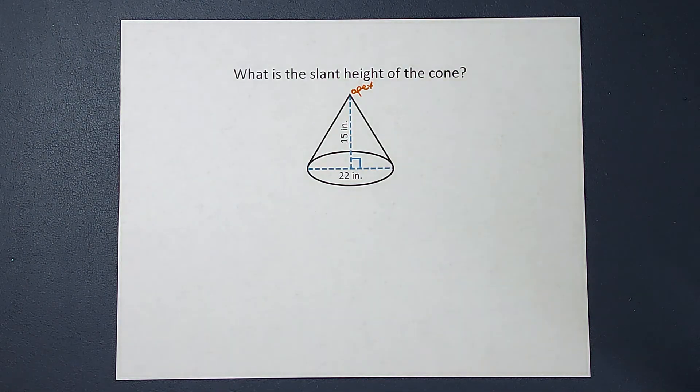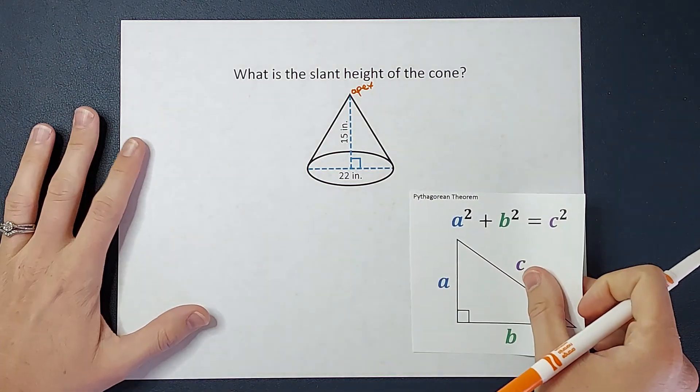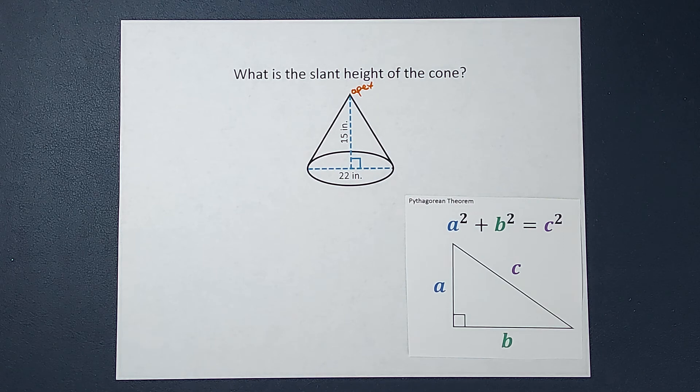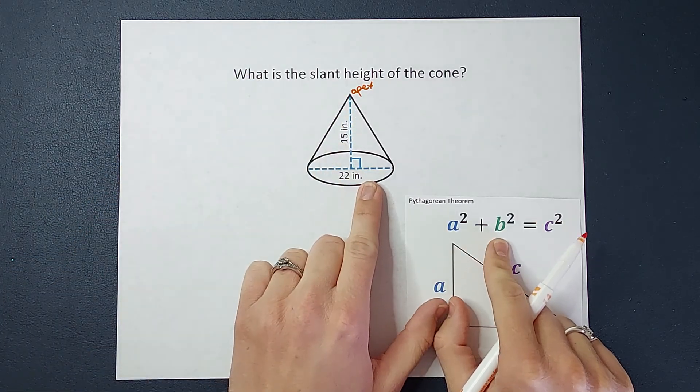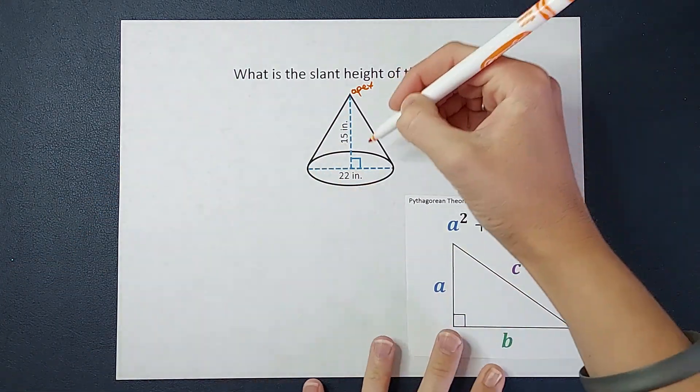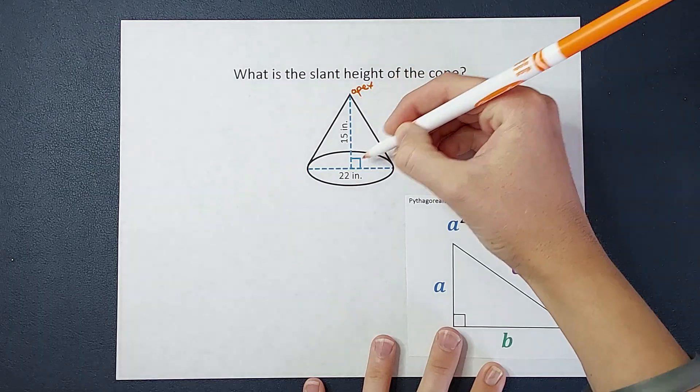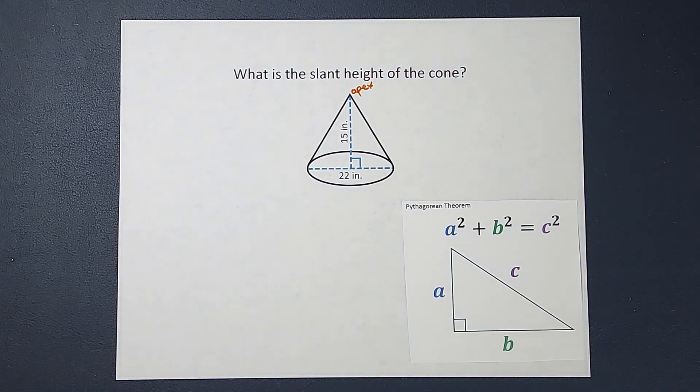So what are we going to do whenever we have a right triangle? We typically use the Pythagorean theorem. If you need a review on this, I'll link one in the corner for you. So I've got a squared, which is one of my legs, plus b squared, which is the other leg, equals c squared, which is what we call the hypotenuse, which is the side across from the right angle.